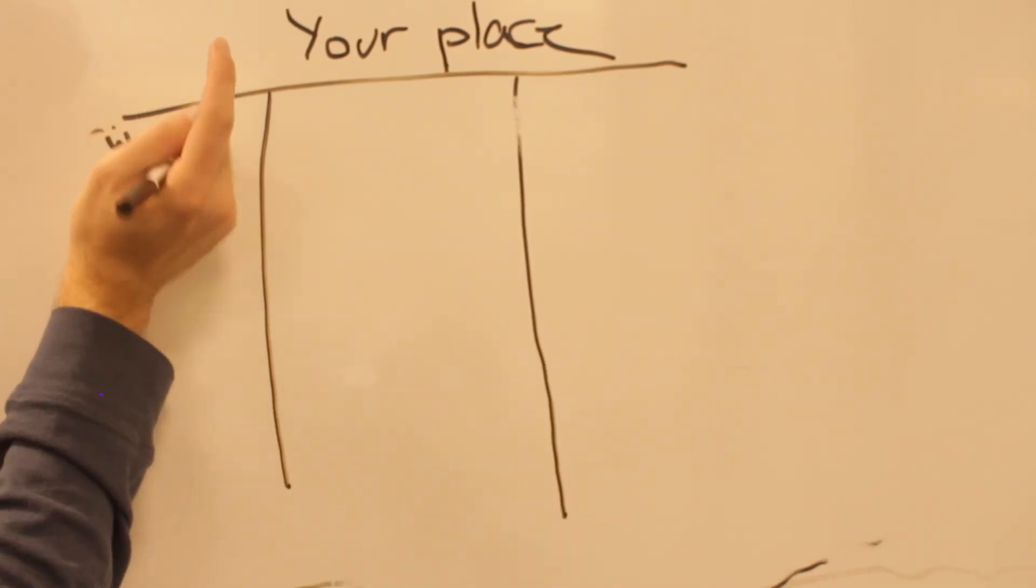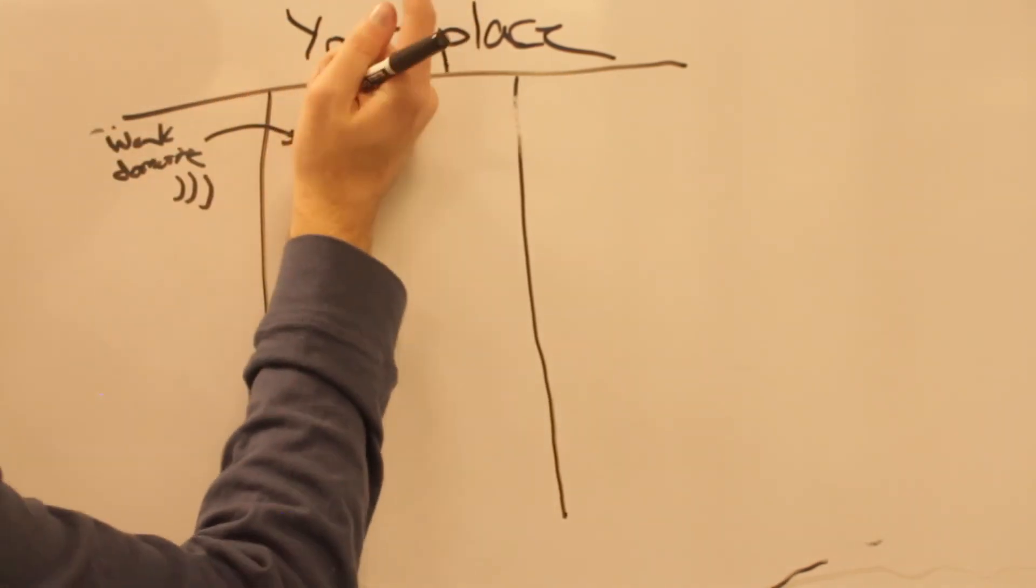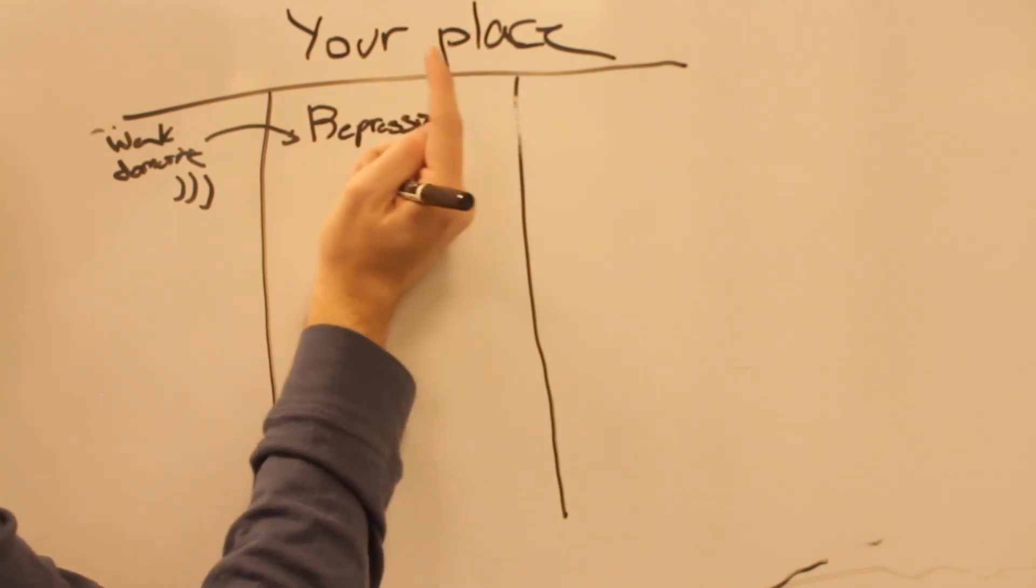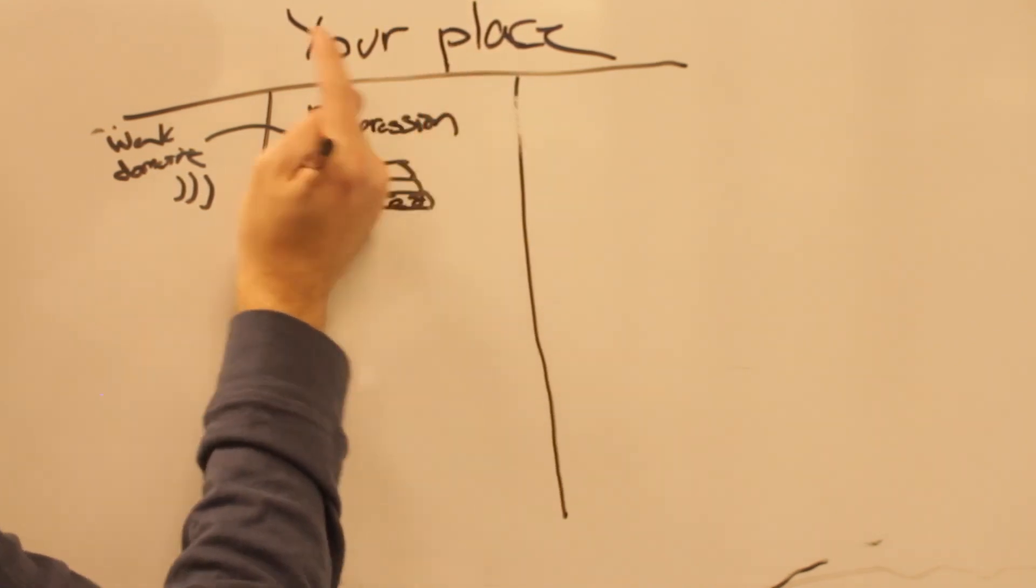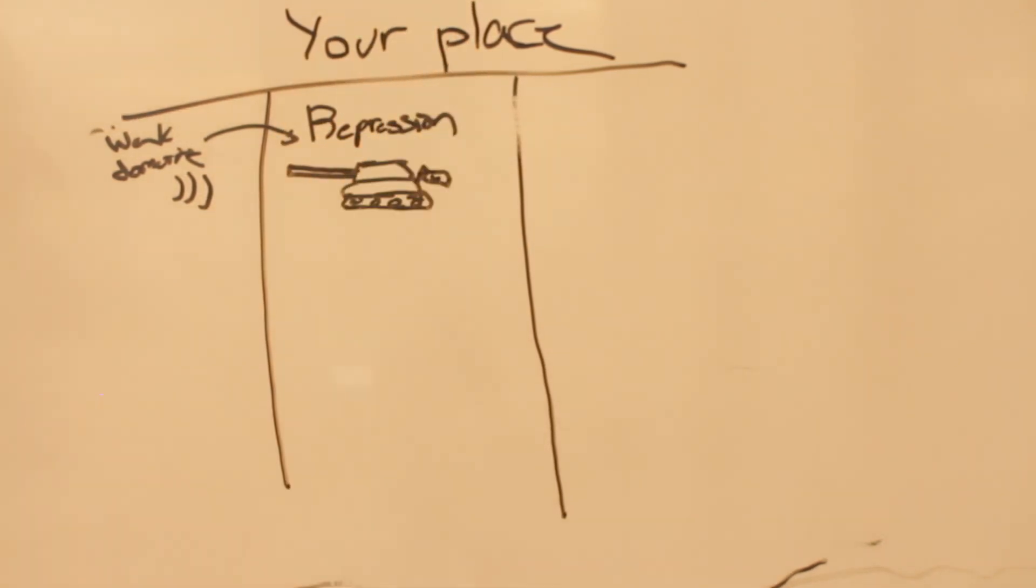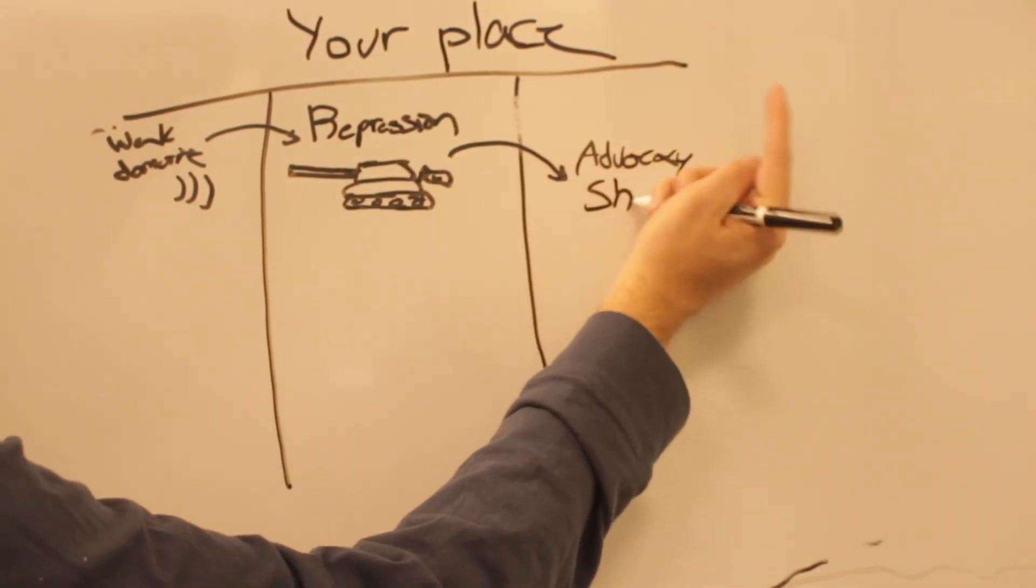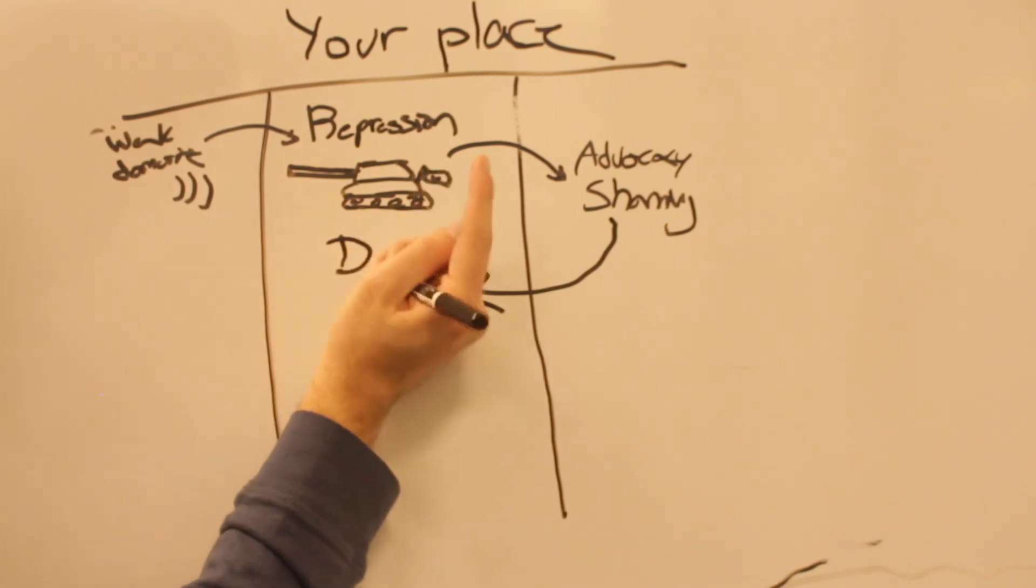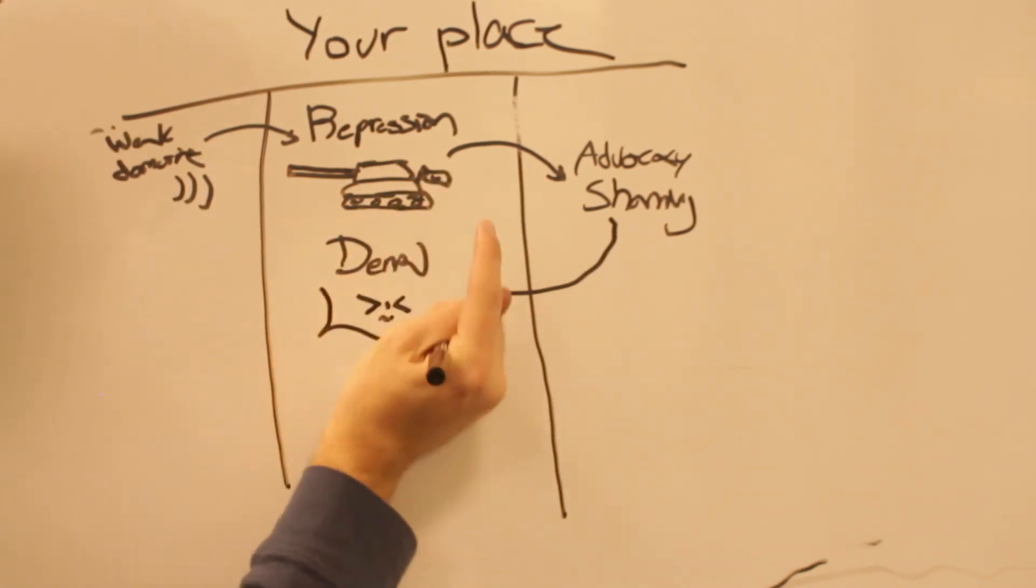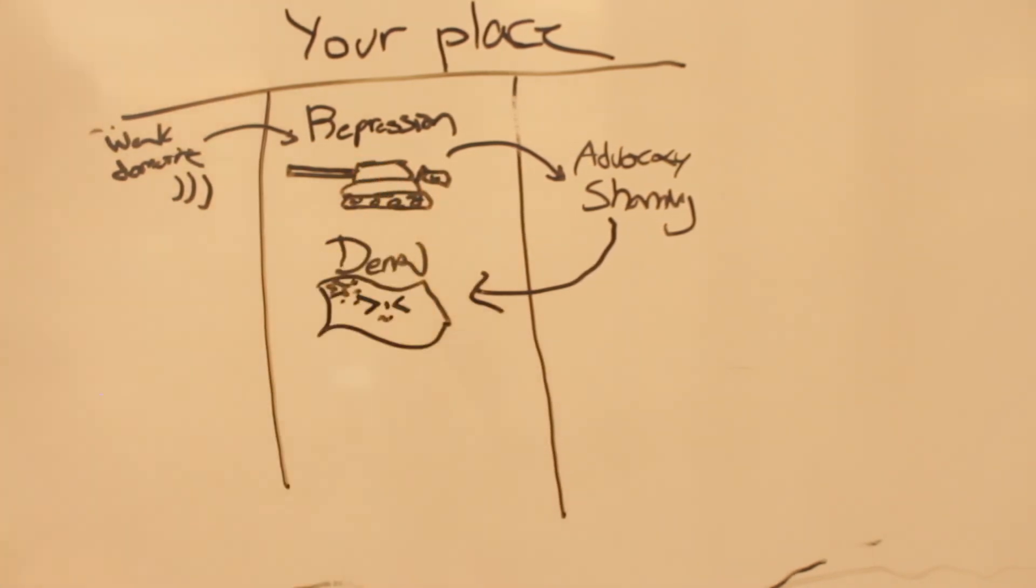To start, it begins with the weak domestic people who are being pressured down by the repression, such as the Chinese militants and security, as well as the re-education camps. Next, it comes to our advocacy and shaming of the Chinese, their denial of this, and ultimately trying to fend off against such claims.